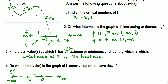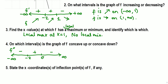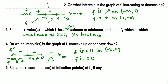A negative second derivative means the function is concave down, and a positive second derivative means concave up. So f is concave up on the interval negative 2 to 0, and f is concave down on negative infinity through negative 2 and on 0 through positive infinity.